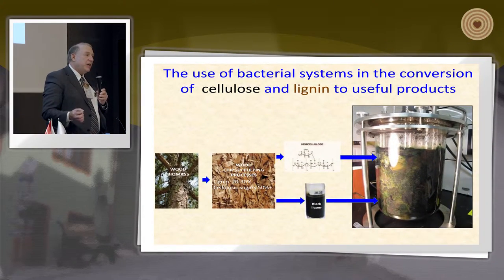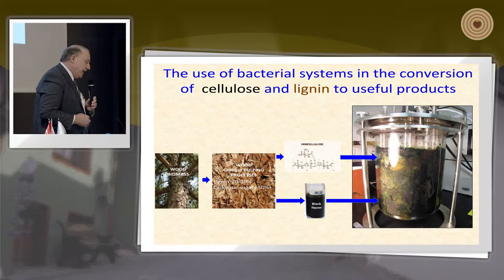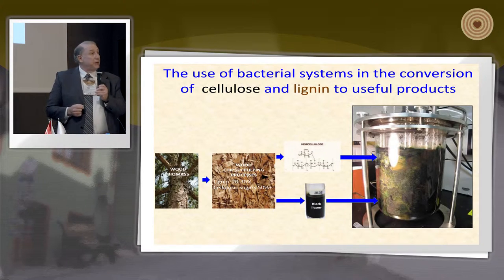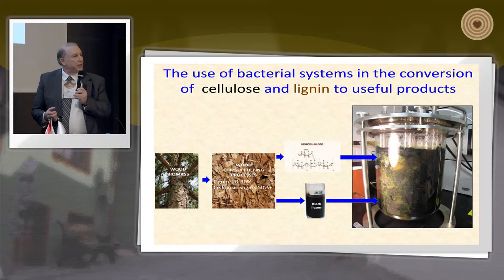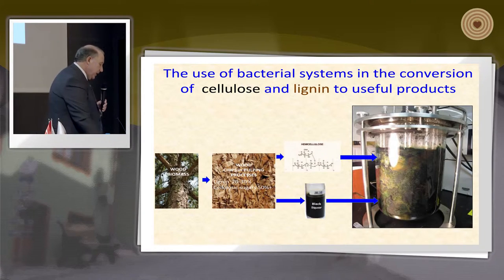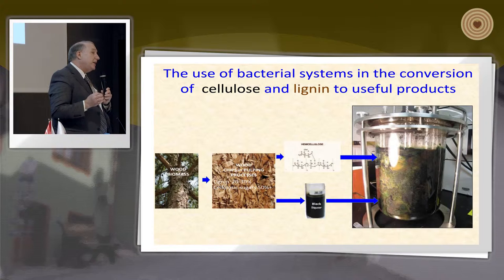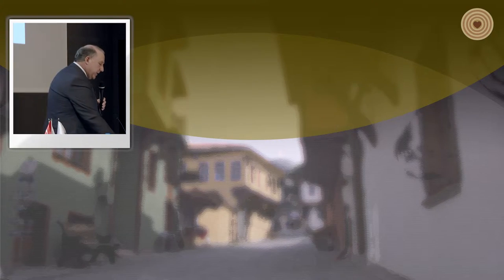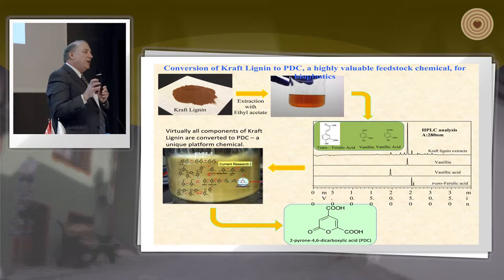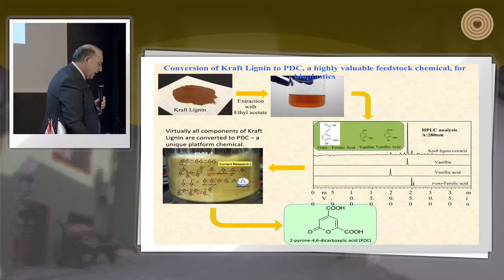We can also take bacteria rather than fungi, and these are things we're doing in my lab in collaboration with Japanese colleagues. We know we can convert cellulose to sugars, which are very valuable. Most recently, we've been able to take lignin in the form of black liquor — produced in the pulp and paper process — and feed it directly to an engineered bacterium, Pseudomonas, to metabolize all the components of the lignin and produce a compound called 2-pyrone-4,6-dicarboxylic acid.